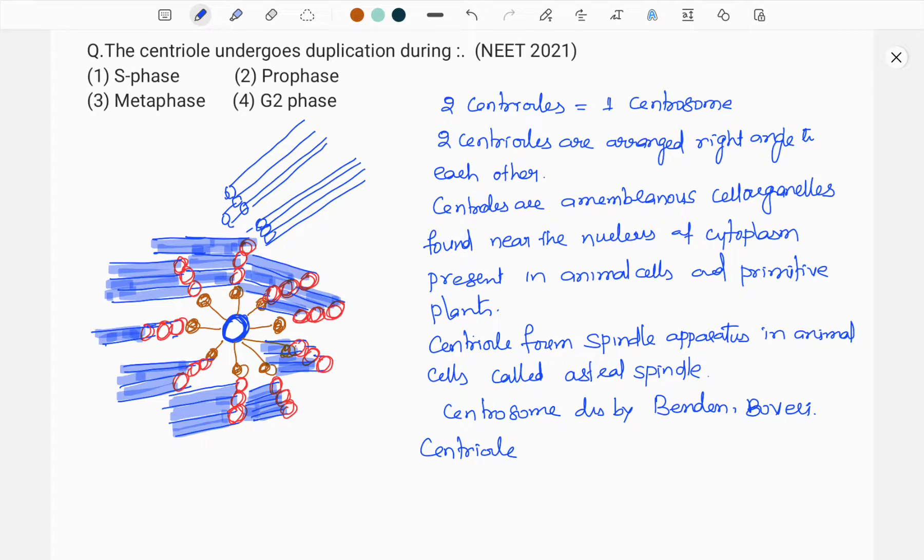Then two centrosomes are formed. These two centrosomes move to opposite poles during the prophase of the karyokinesis. There they radiate the spindle apparatus.